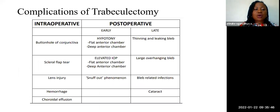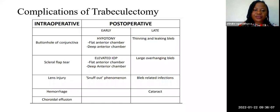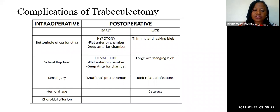The complications of trabeculectomy can be intra-operative and post-operative. Intra-operative complications include buttonholing of the conjunctiva, scleral flap tear, lens injury, hemorrhage, and choroidal effusion. Post-operative complications can be early or late. Early complications include hypotony with flat or shallow anterior chamber, elevated intraocular pressure with flat or shallow anterior chamber, and the snowfall phenomenon or wipe-out syndrome. Late complications include thinning and leaking of the bleb, overhanging bleb, bleb-related infection, and cataract.